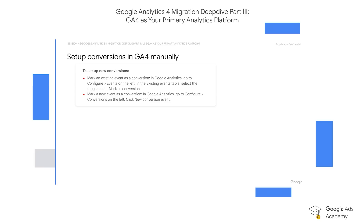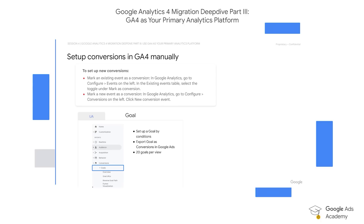If you're looking to set up conversion actions in GA4 manually, there are a couple of things to keep in mind. In Universal Analytics, we would typically set up a goal by specifying certain conditions that would have to be met, whereas conversion reporting in GA4 is event-based. So essentially, we would need to set up an event in GA4 and then select and specify that particular event as a conversion.